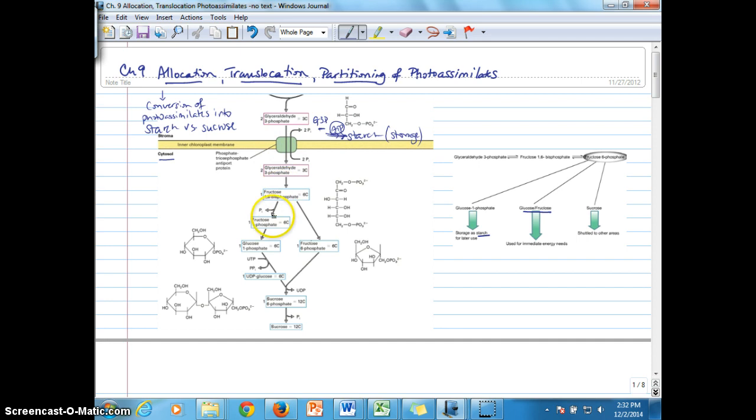If G3P is exported into the cytosol, then the main thing we're looking at is the synthesis of sucrose. And this does require some energy as well. And in addition, we can see the synthesis of glucose and fructose. We just have to get rid of that phosphate group. And so if we look over here on the right, then we can see that carbon partitioning is going to be sort of the idea of what happens to all of these potential products.